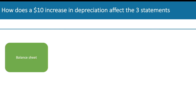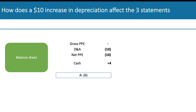Lastly, let's look at the balance sheet. On the asset side, gross PP&E would be unaffected, but depreciation went up by 10, so this reduces net PP&E by 10. Then cash went up by 4, as we just saw. So the asset side of the balance sheet changes by minus six. On the liabilities and equity side, retained earnings also drops by minus six, flowing through from the net income. So the liabilities and equity side is also minus six, and the balance sheet balances.